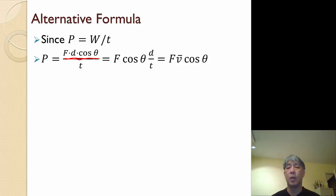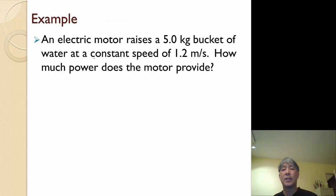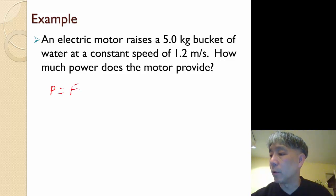So that's another formula that we can use, and that's going to be useful in an example like this. An electric motor raises a 5 kilogram bucket of water at a constant speed of 1.2 meters per second. How much power does the motor provide? So this is a situation that I'm going to need to do P = F·v·cos θ.